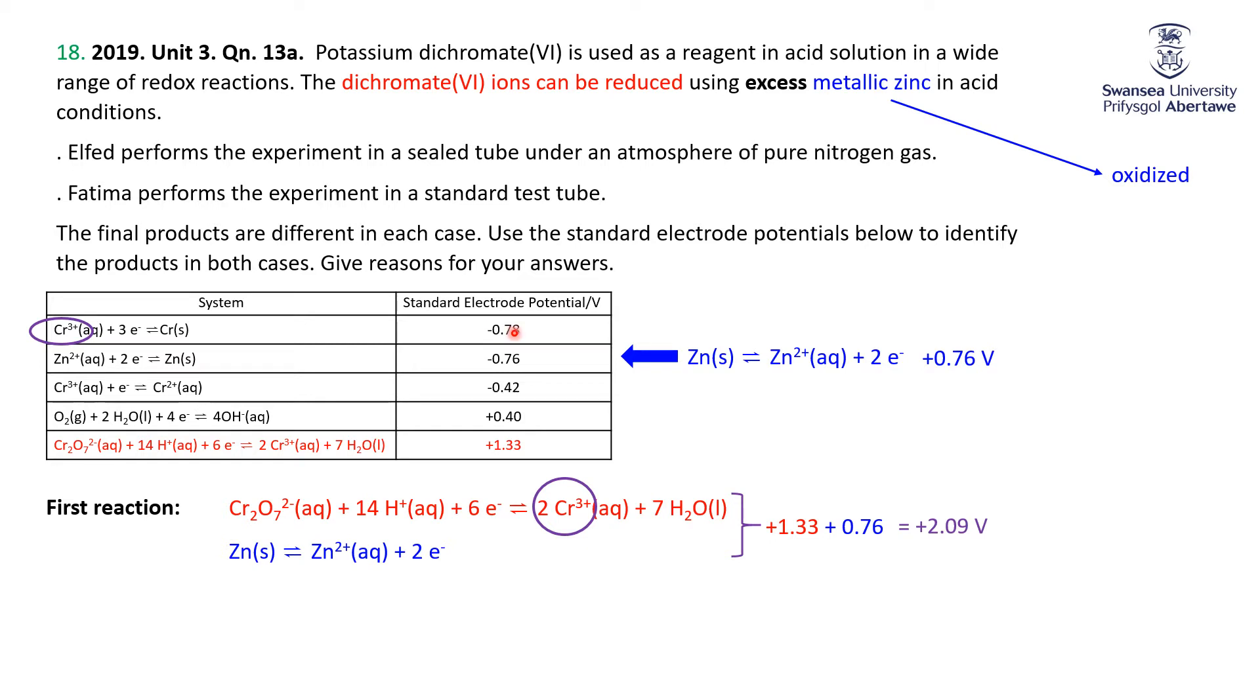Got this one here where Cr3+ can be reduced to Cr, and that's got a potential of minus 0.78. Well, minus 0.78 is more negative than our plus 0.76 is positive. But we also have Cr3+ here being reduced to Cr2+, and that's just minus 0.42. So our excess zinc that gives us plus 0.76 volts can go ahead and reduce the Cr3+ that we made to Cr2+. So that's a second reaction going on. Still having the zinc being oxidized, being a super reducing agent, and that's reducing the Cr3+ to Cr2+.